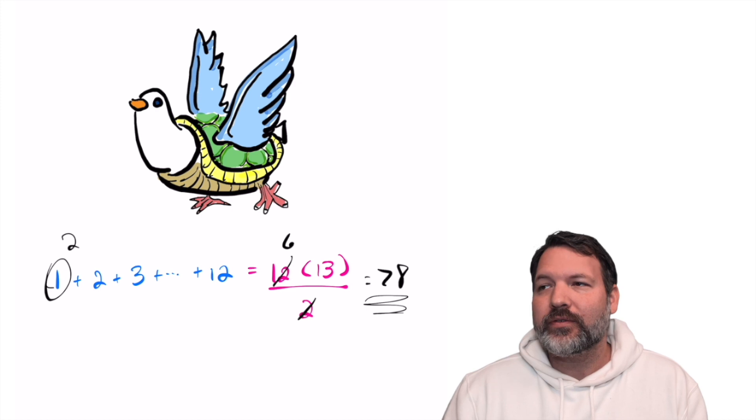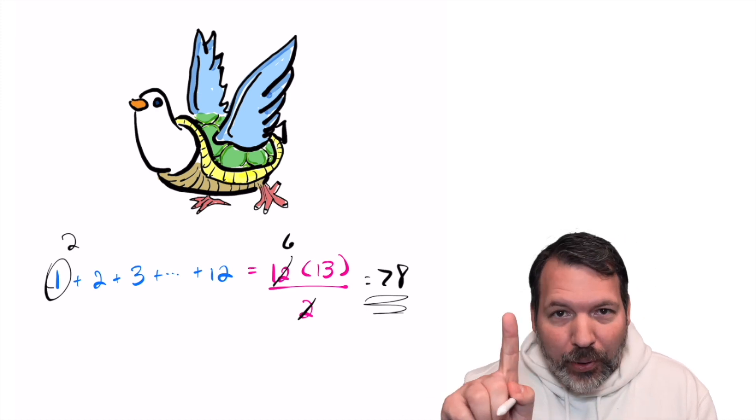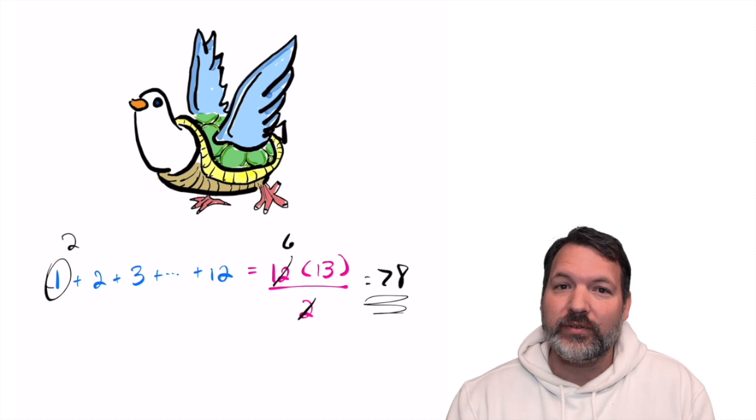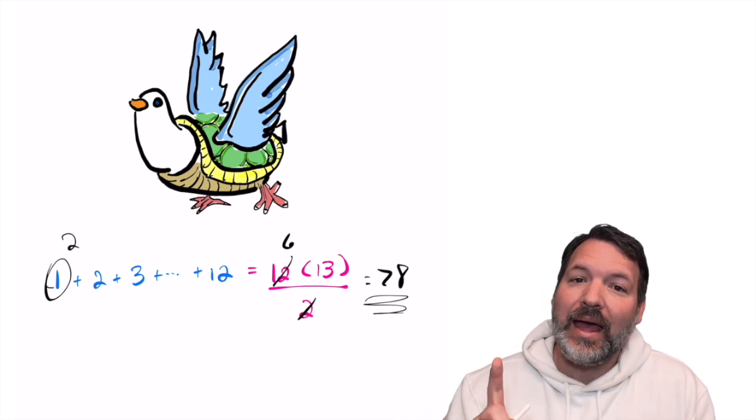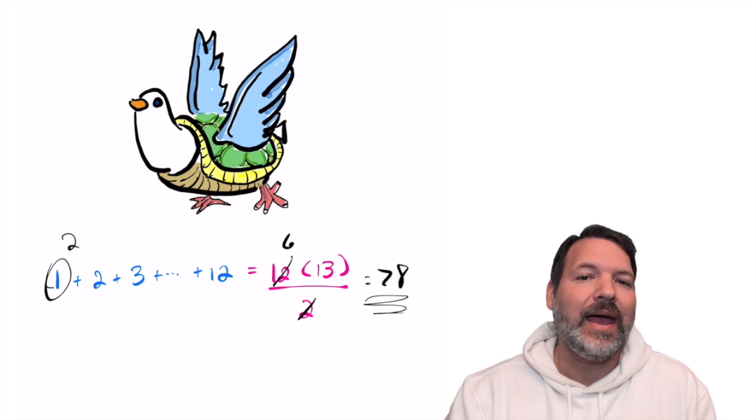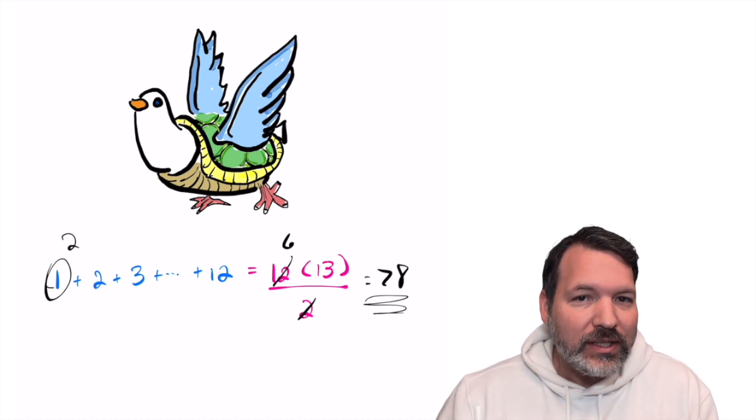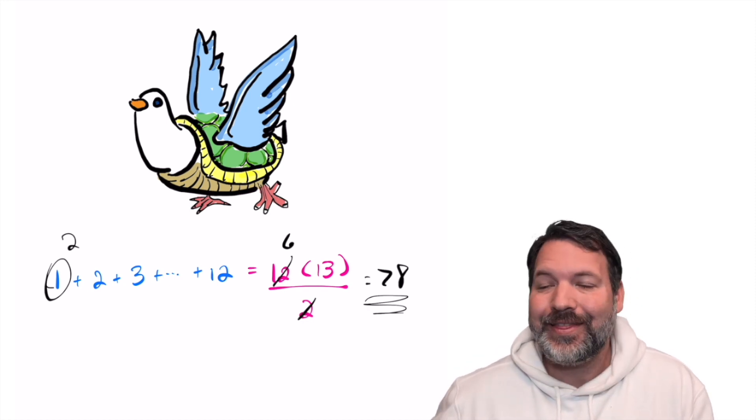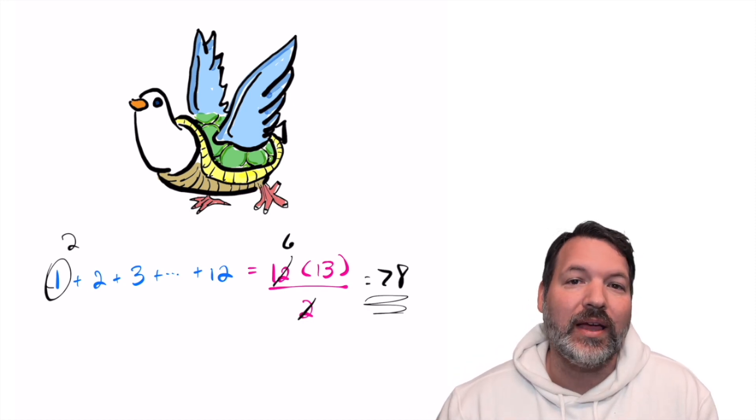In other words, on the first day of Christmas, my true love gave to me one partridge and a pear tree. On the second day of Christmas, my true love gave to me two turtle doves and the partridge and the pear tree. In other words, on that second day I actually get three items. This number, 78, is the number of gifts you would get on the 12th day, but that doesn't include the other 11 days.